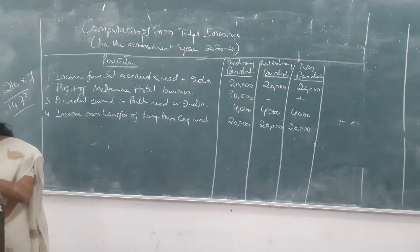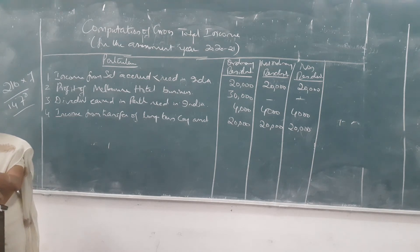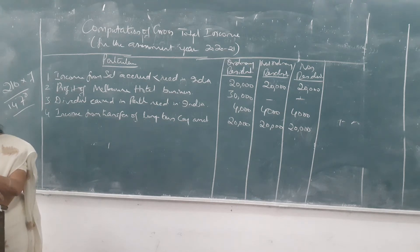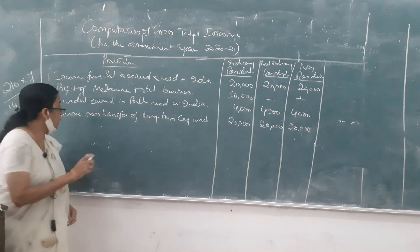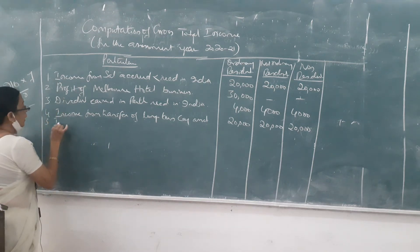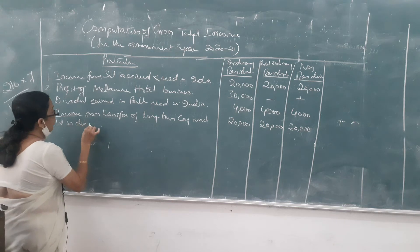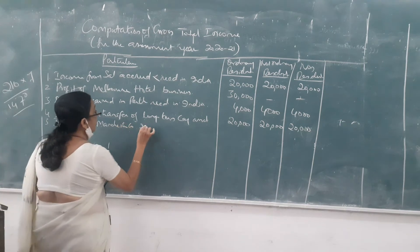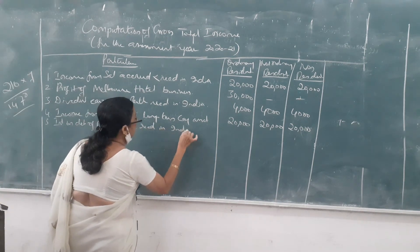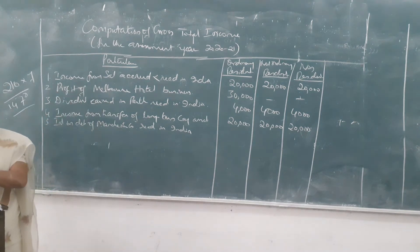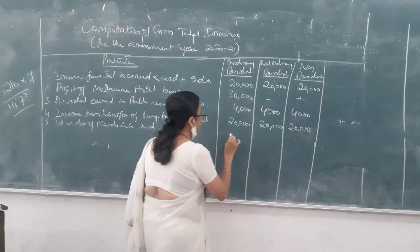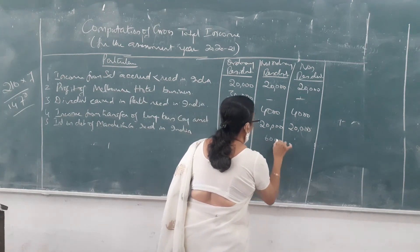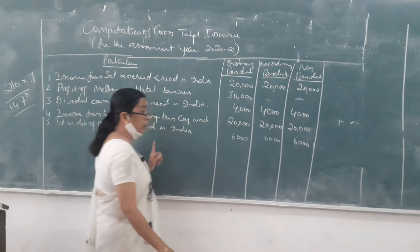Fifth: interest on debentures of a company at Manchester, received in India — 6,000. This income is earned in Manchester but received in India. Since it is received in India, it is applicable to all three categories.